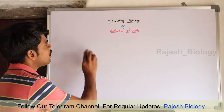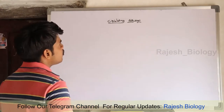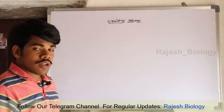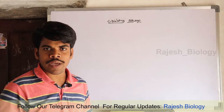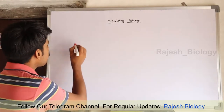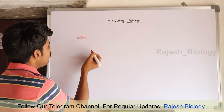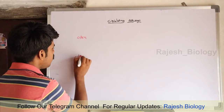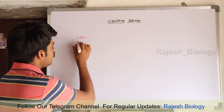First, circulating pathways. There are two types of circulating pathways: open type and closed type.